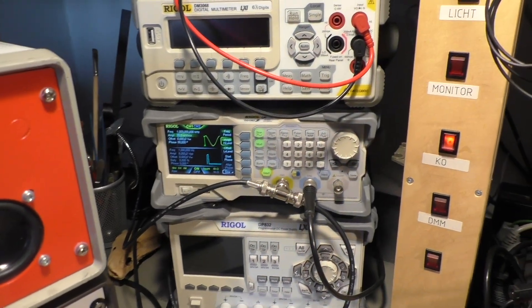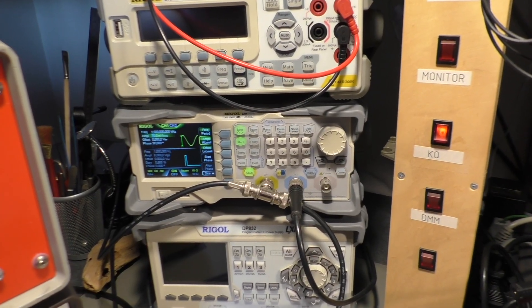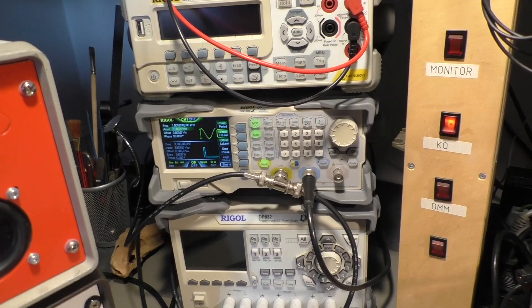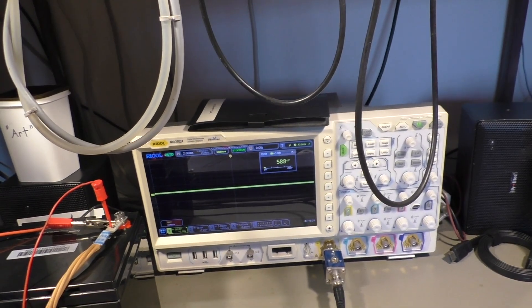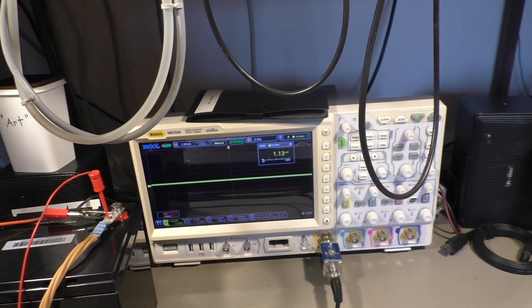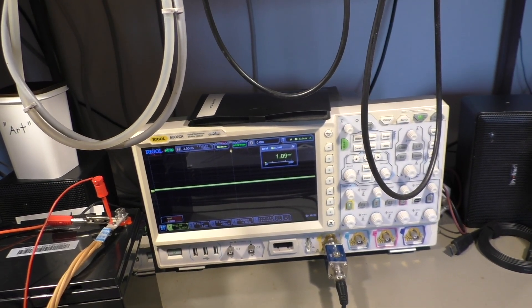Then we have a function generator, it's the Rigol DG1062 set, and we have an oscilloscope to measure the waveform and to see if the waveform is distorted or not.